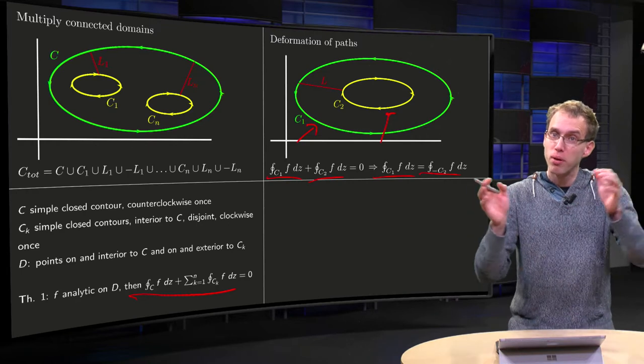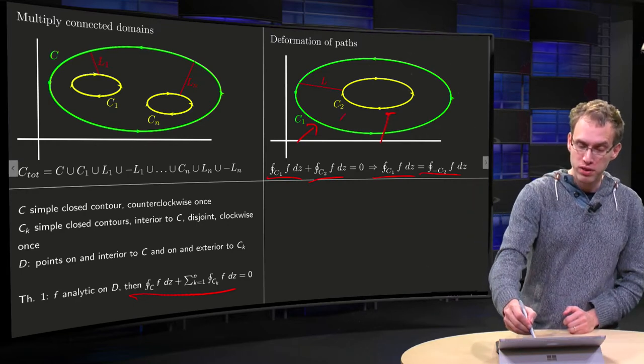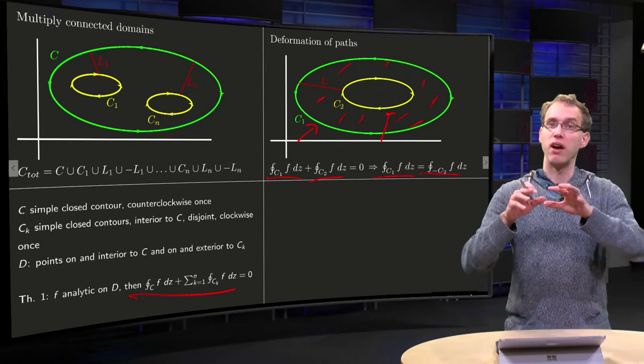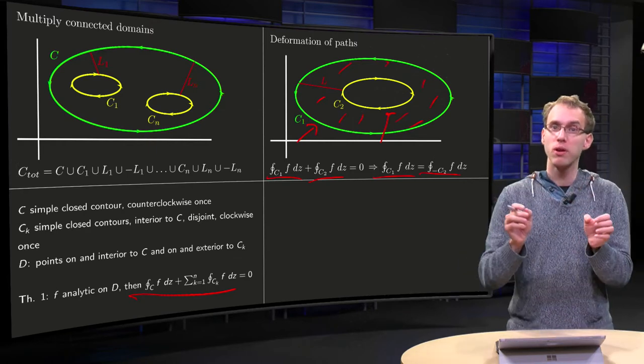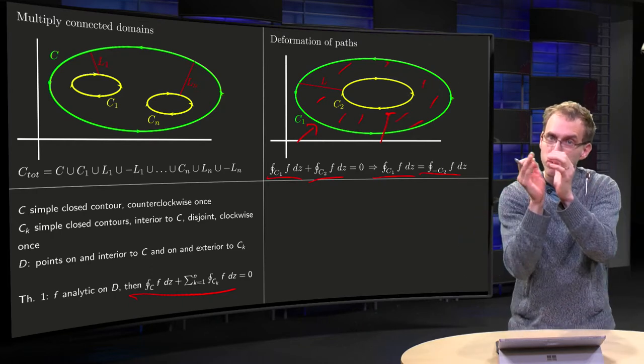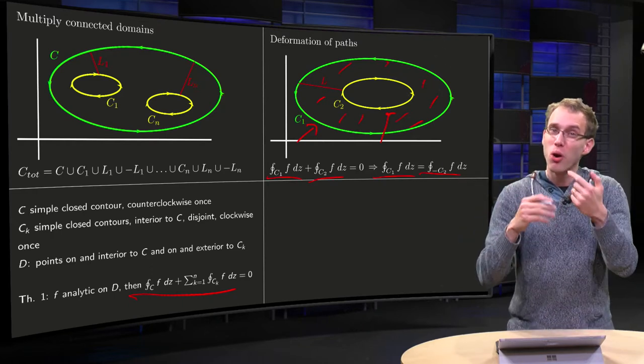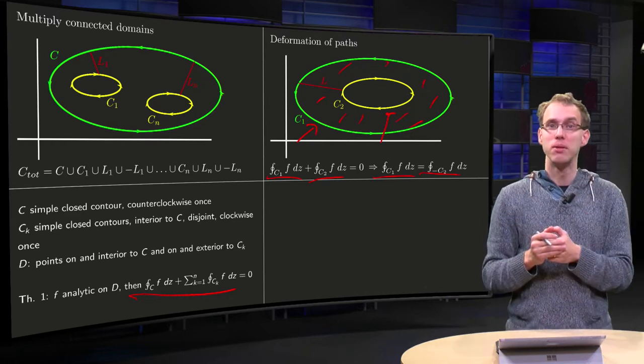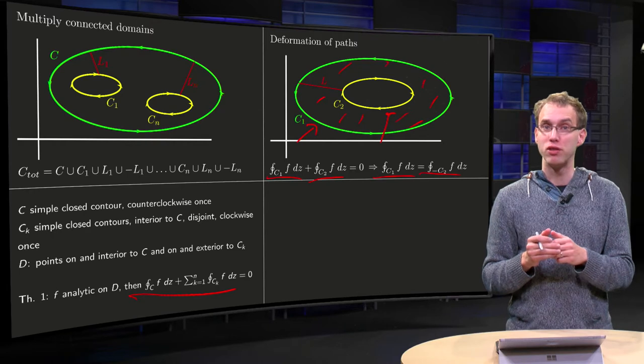So you can deform your path as long as your function is analytic in between your contours. So if you have an integral along a certain contour, and your function is analytic in a lot of places, then you can deform your contour as long as you are only passing points where your function is analytic. And that's the principle of deformation of paths.